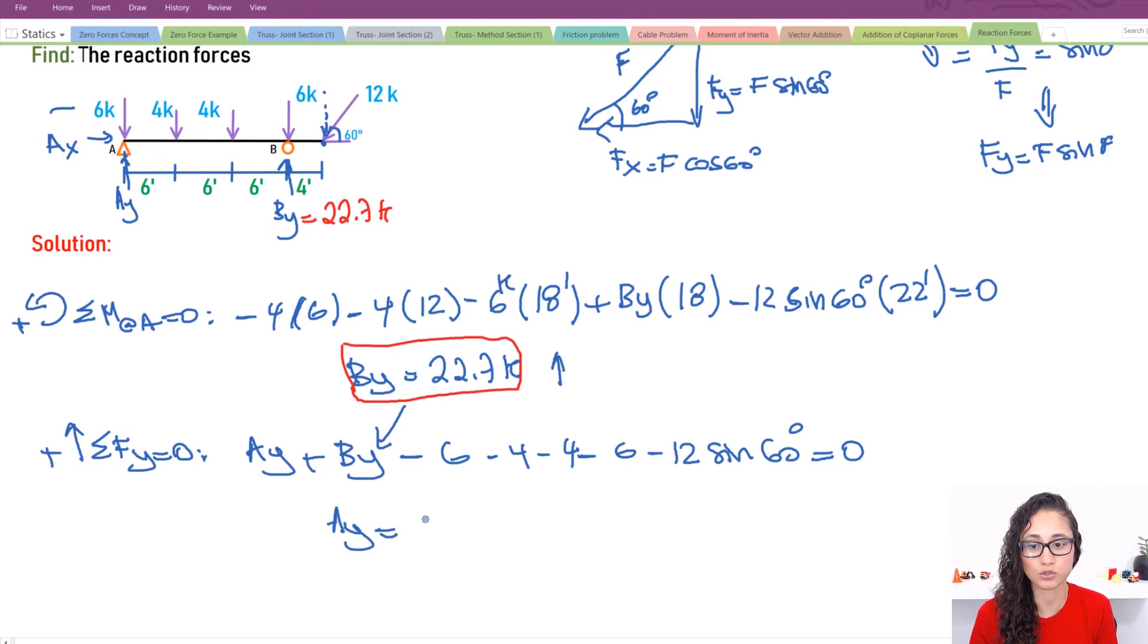So Ay is equal to 7.69 kips. And this is positive, which means it's going to go up just like how we first assumed it. So this is equals to 7.69 kips.